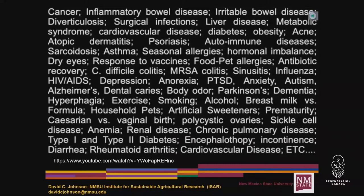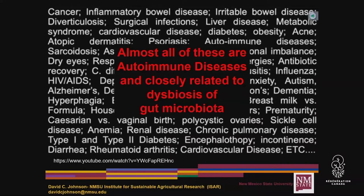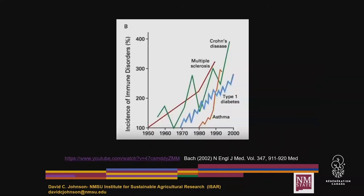Almost every autoimmune disease that we have today is related to the dysbiosis of our microbiota. We were talking earlier about multiple sclerosis, Crohn's disease, type 1 diabetes. Crohn's disease and IBS and C. diff infections have increased dramatically.